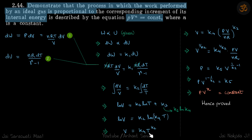So we'll get rid of T. We'll write temperature in terms of pressure and volume. So that will be PV by NR.